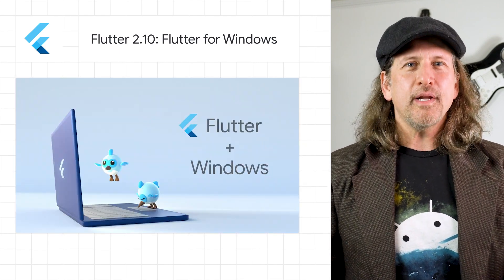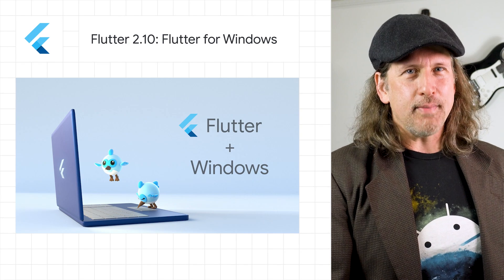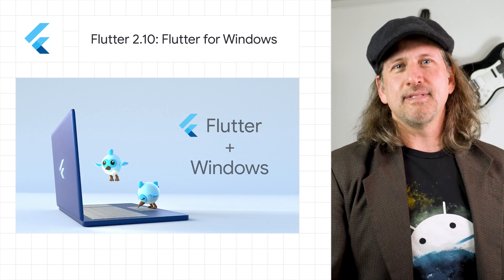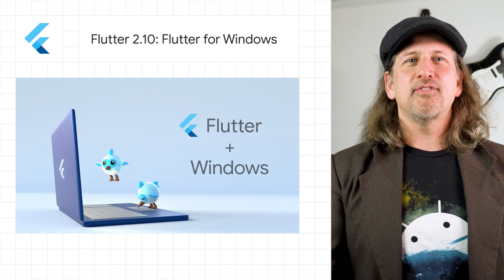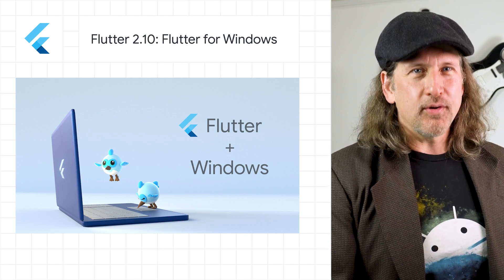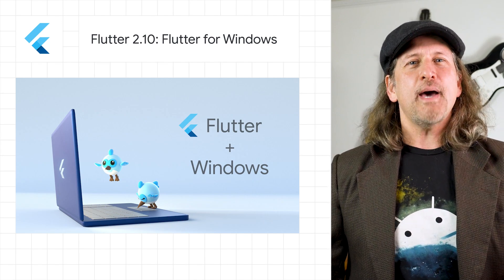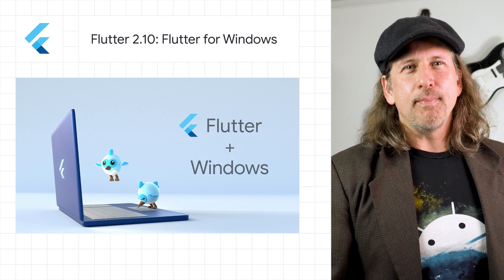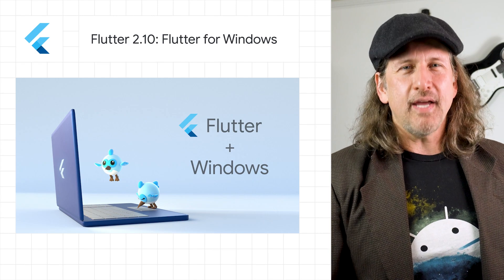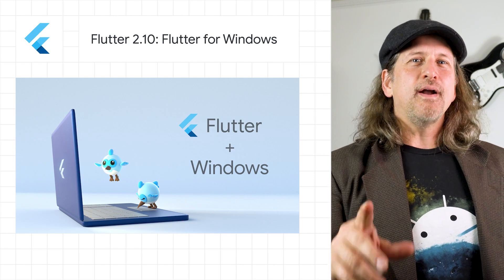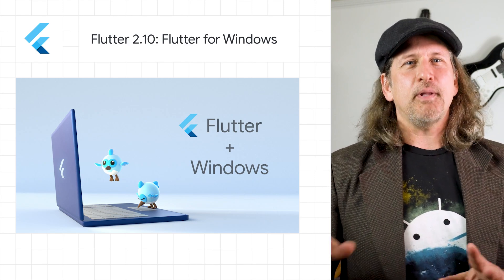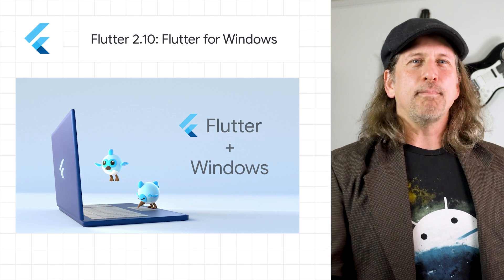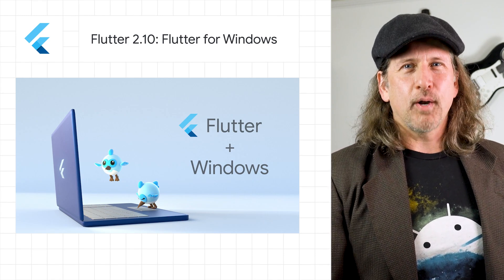Flutter 2.10 also includes initial support for dirty region management, optimizations around picture recording and platform-specific enhancements such as compressed pointers in iOS, the beginnings of Material 3 support with color schemes, automatic support for Android's multidex, and a non-painting platform view for the web that removes much of the overhead from using a native HTML widget. 2.10 also includes improved tooling and platform handling from Dart 2.16. Learn more in the posts on Dart, Flutter, and Flutter for Windows.